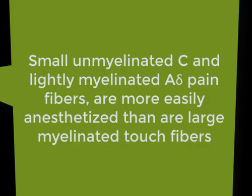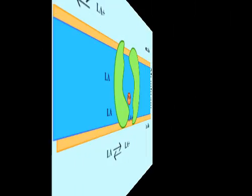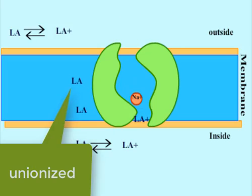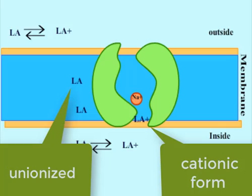The block of local anesthetics is also dependent on nerve size. The small unmyelinated C and lightly myelinated A-delta pain fibers are more easily anesthetized than large myelinated touch fibers. The ionization of local anesthetic is an important issue. The unionized form is required for passing through the neuronal membrane to act on sodium channels, and the cationic form is active at the receptor site.